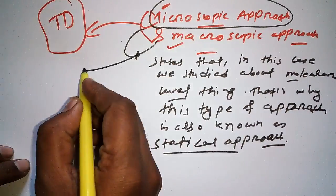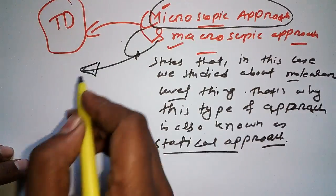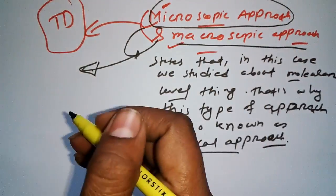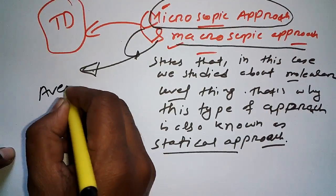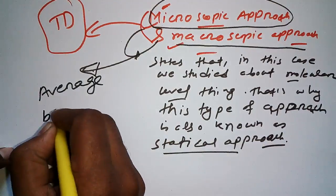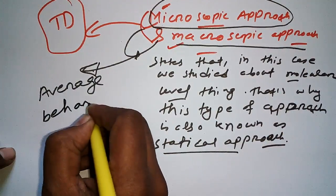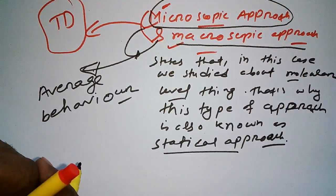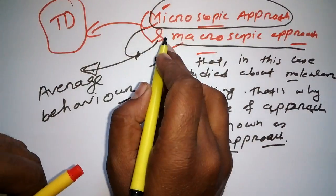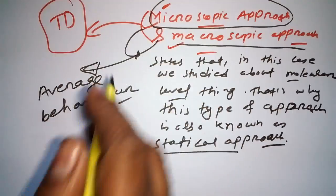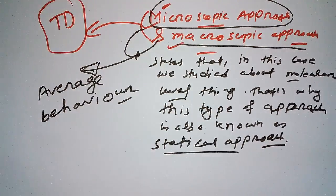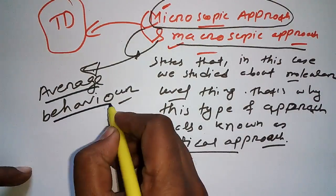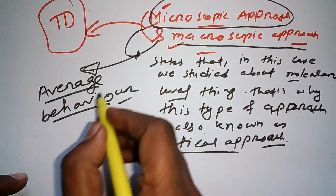Now let me tell you what is macroscopic approach. In the case of macroscopic approach, we take the average behavior of molecules. That's why it is known as macroscopic approach — from the name itself we can understand what it means.